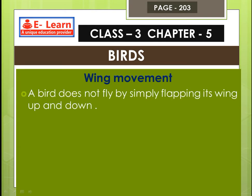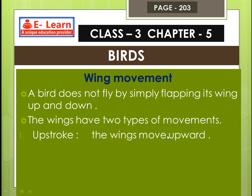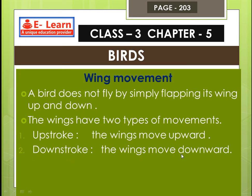Wing movement: a bird does not fly by simply flapping its wings up and down. The wings have two types of movement — upstroke, when the wings move upward, and downstroke, when the wings move downward.